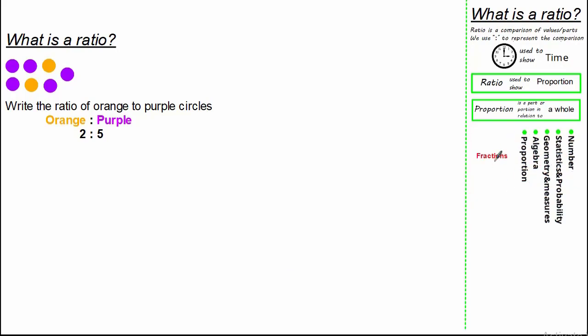Within this proportion strand we also have fractions, because the definition of proportion states it's a part or portion in relation to a whole. And when we write a fraction, the denominator indicates the total number of parts which make the whole. Therefore, we can use ratio to write fractions and vice versa.